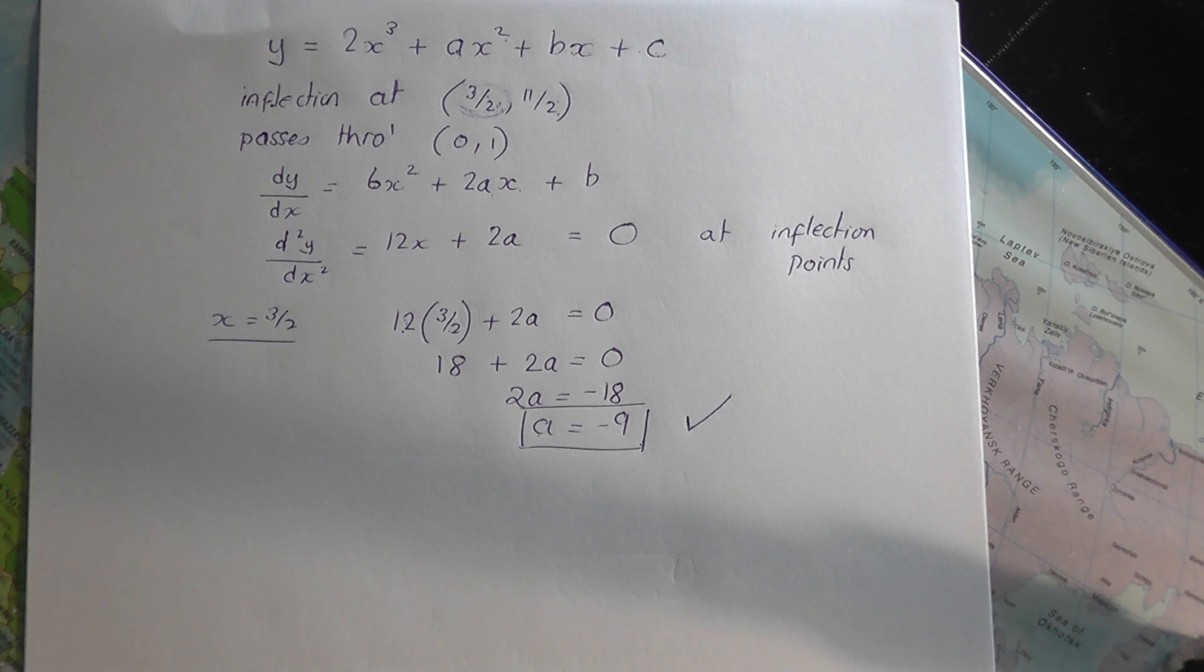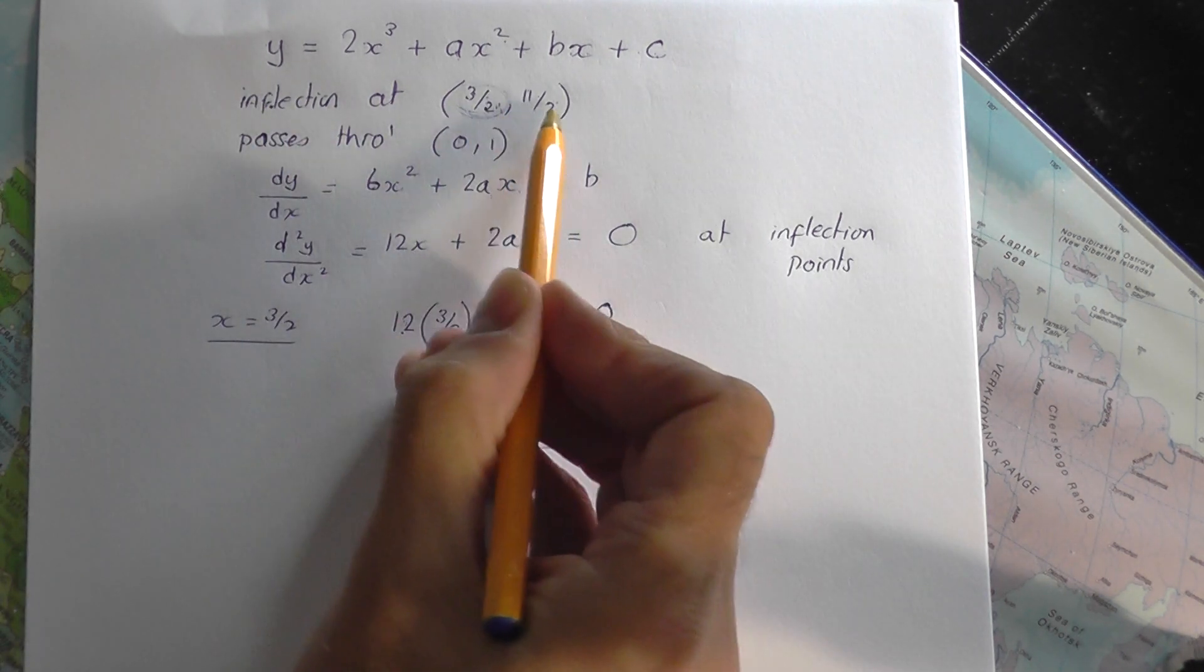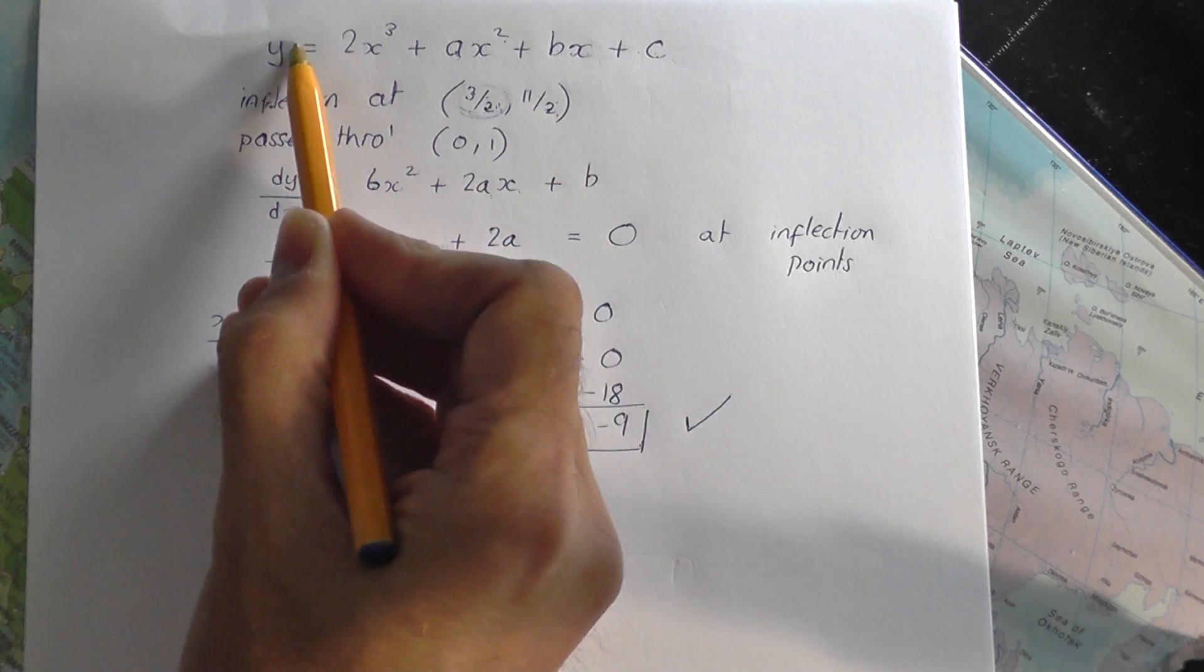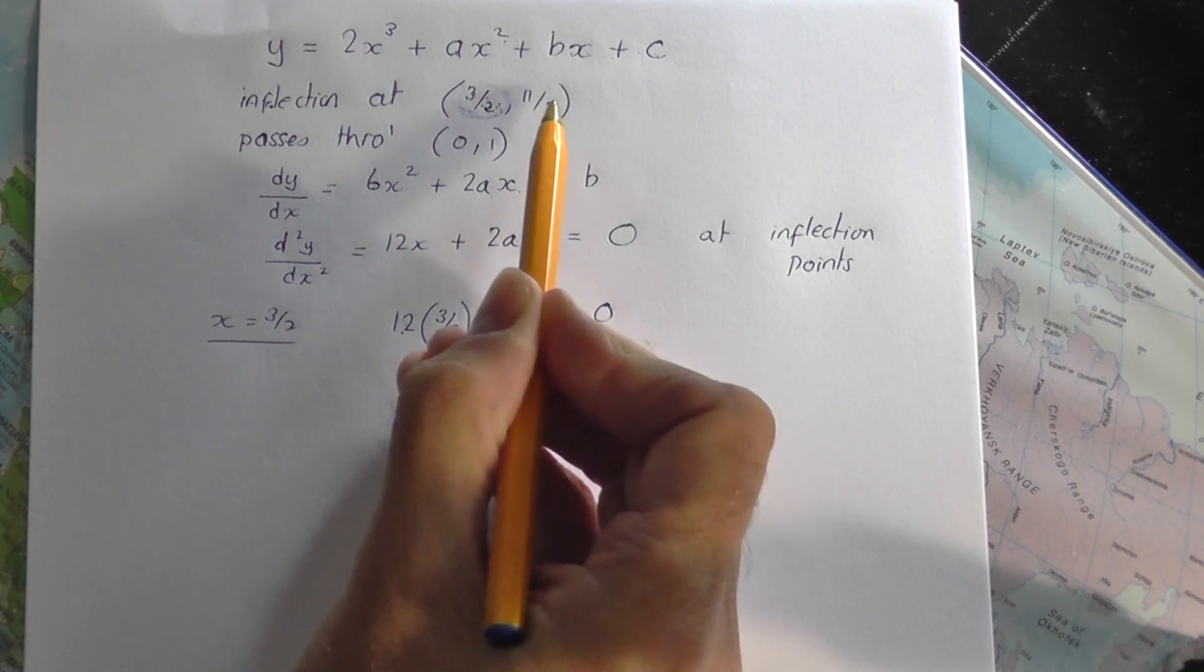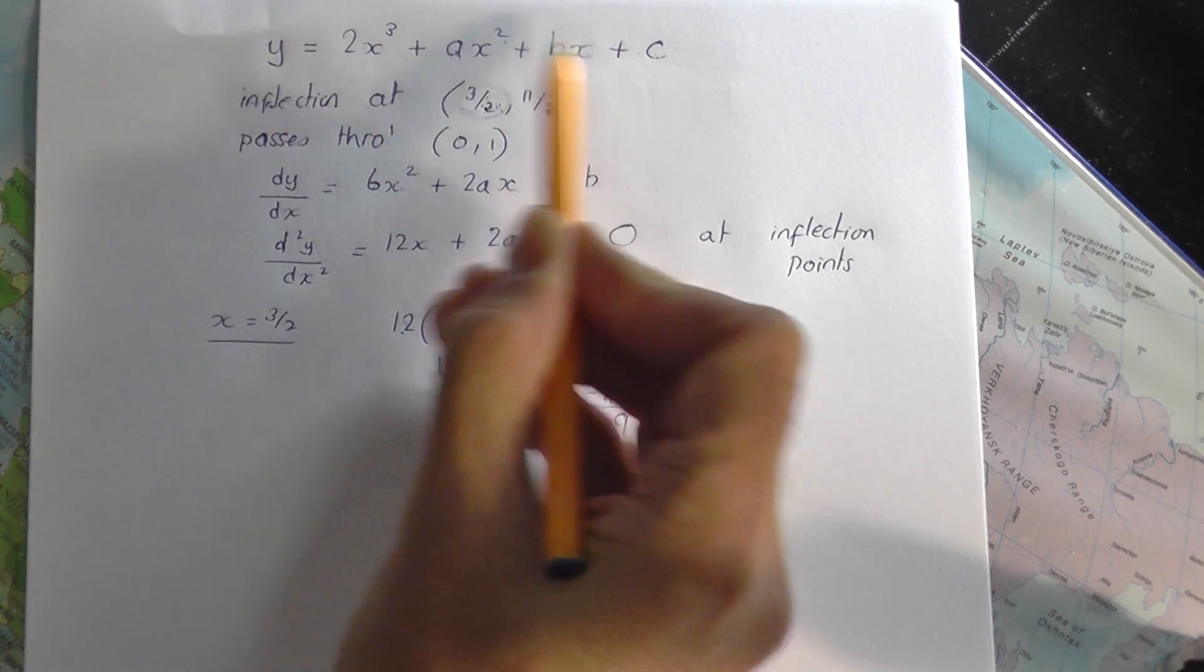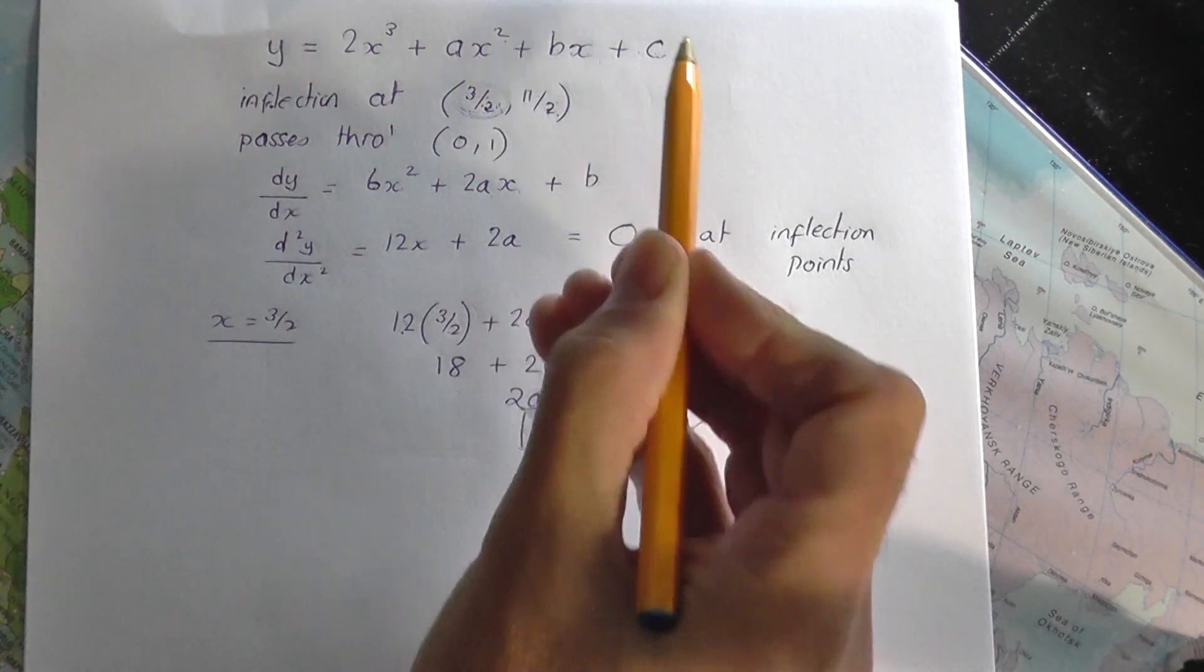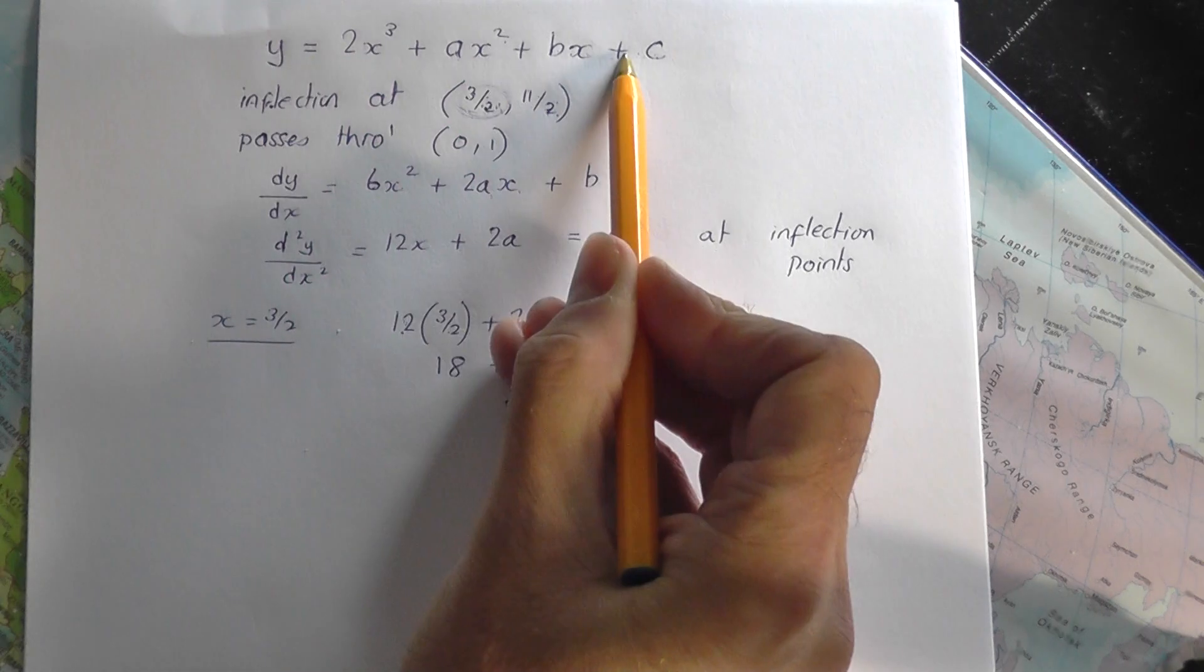Right, so how do we find b and c? Well, we need to do two more calculations. So, go back to the inflection point, 3 over 2, 11 over 2. If that's an inflection point, it must actually lie on that curve. So, if I was to sub x equals 3 over 2, y equals 11 over 2, back in the original equation with a's, b's and c's in, the resulting statement that comes out from this must be a true statement, because the point lies on the curve. It's an inflection point on the curve.